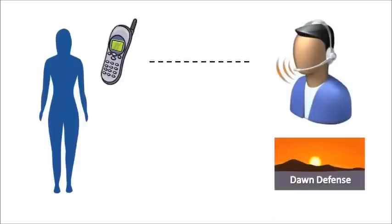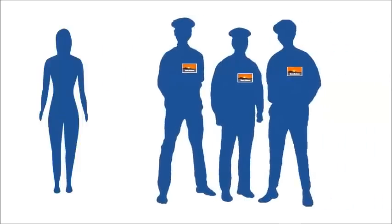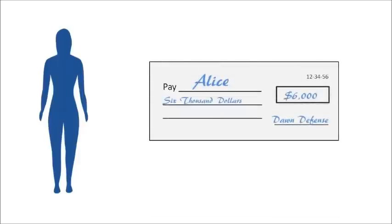They quickly dispatch agents to her location. Unfortunately, by the time their agents arrive on the scene, the mugger is long gone. The agents examine the crime scene and gather witness statements and any evidence that might help them identify and locate the mugger. As specified in their contract, Dawn Defence pays Alice compensation for her losses — enough to cover the possessions taken from her, and a good deal more for her time, trouble and distress.